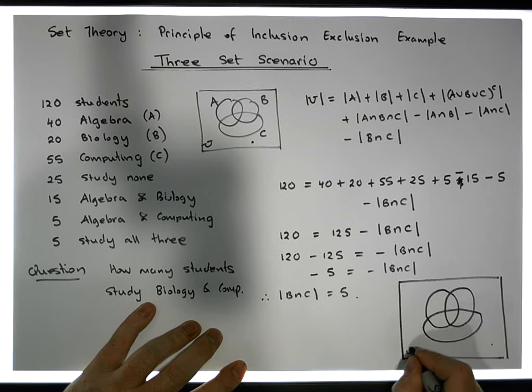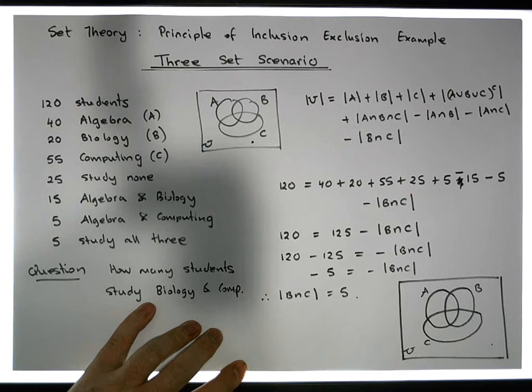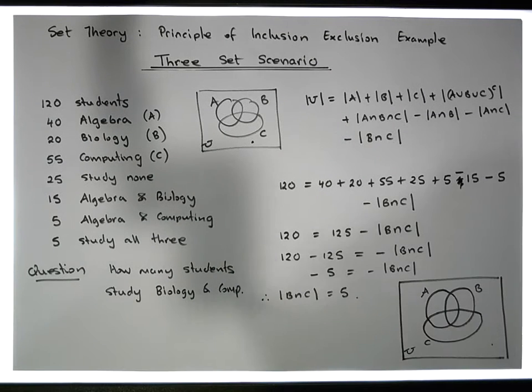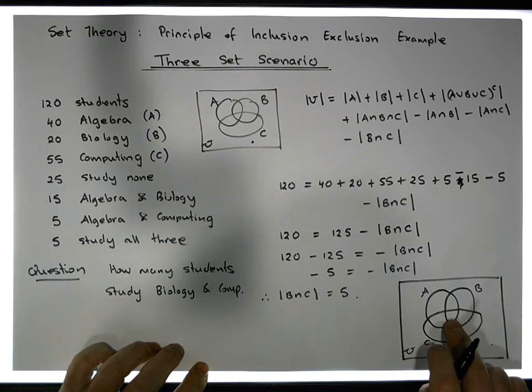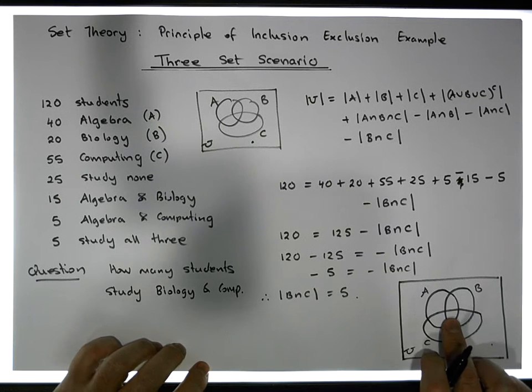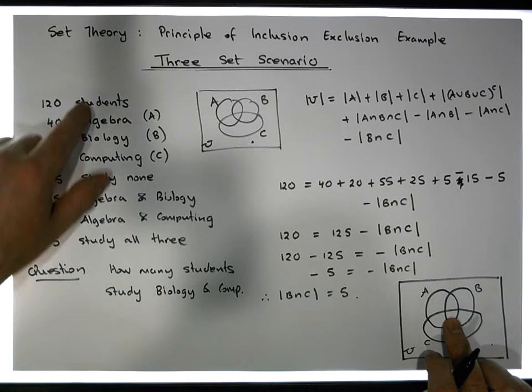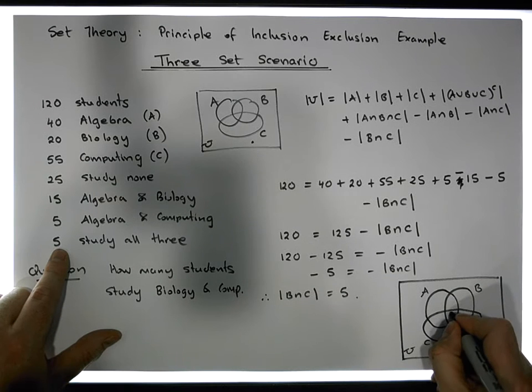Let's fill in all of our information into the set, into all the different room locations. We always start with the most center piece of information. The most center is A intersection B intersection C. That's how many study all three. Well there's five people that study all three, so there's five in there.